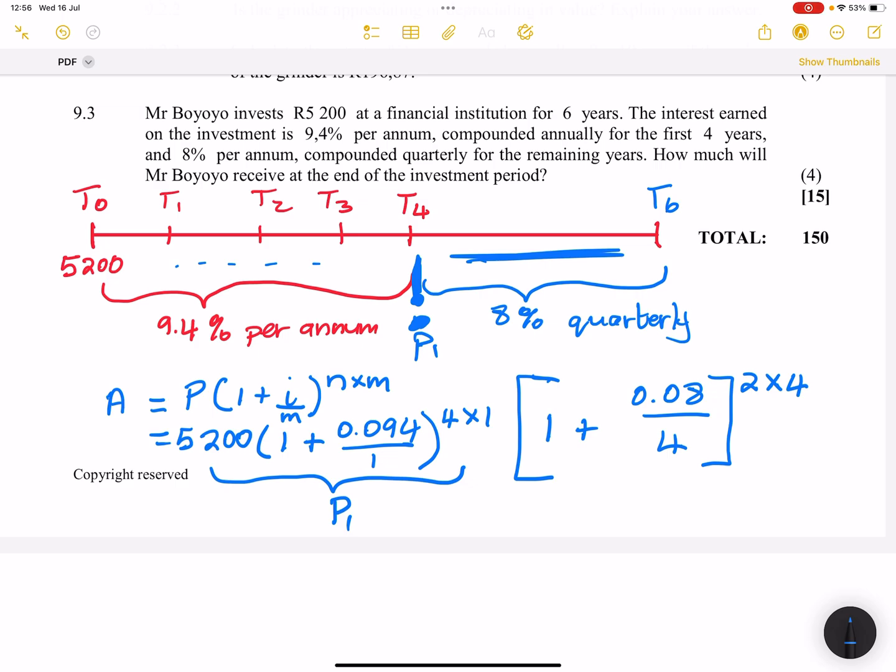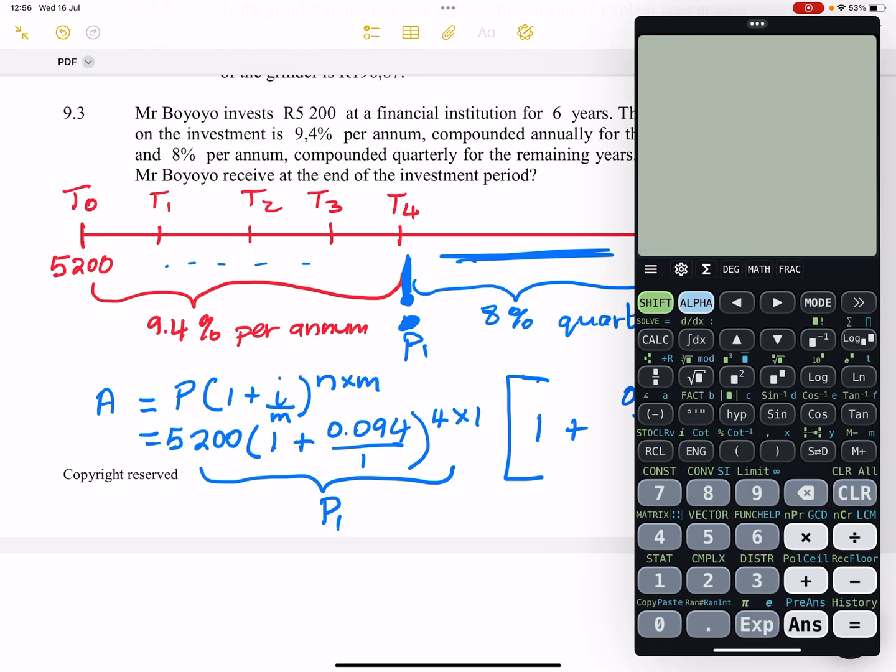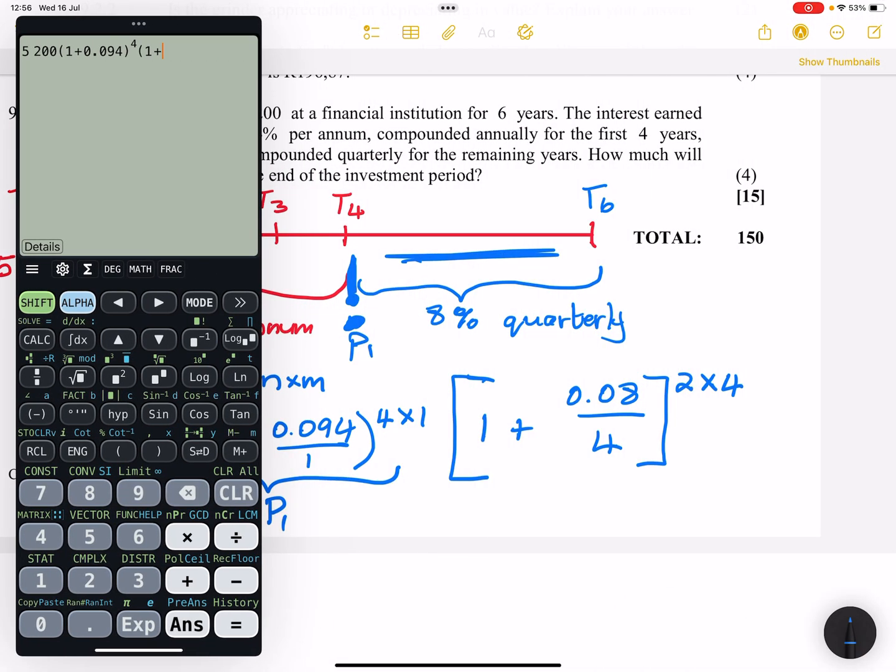I hope that makes sense to all of you. Right, so let's calculate it together. So that's 5,200. That's 1 plus 0.094. That's raised to the exponent of 4. Now, this is compounded again into 1 plus. That's 0.08 over 4. And that would give me 2 times 4. Rather, let's say, YX 2 times 4, which is 8. And the answer that I get is 8,727.18.